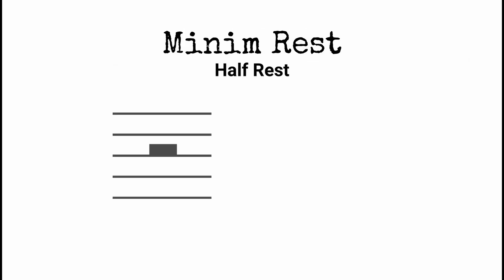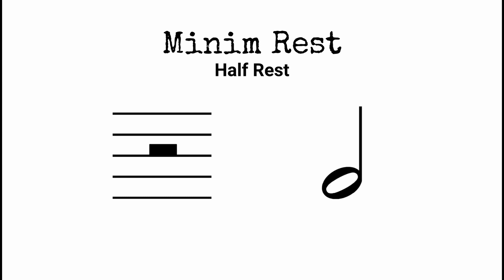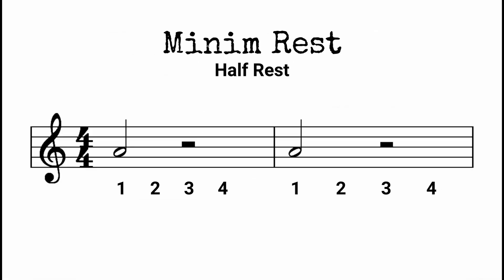A minim rest, also known as a half rest, looks like a small rectangle mounted on the third line from the bottom of the stave. A minim rest tells us to stay silent for two beats, in the same way a minim note tells us to play a note for two beats. Let's listen to an example.